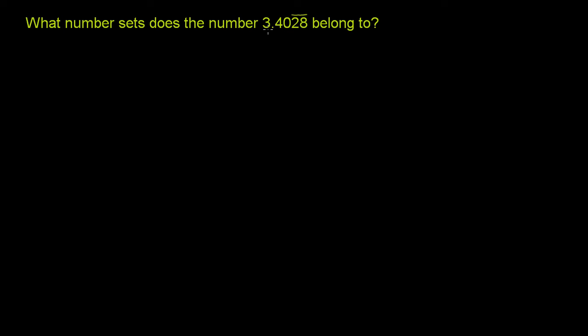What number sets does the number 3.4028 repeating belong to? Before even answering the question, let's think about what this represents, and especially what this line on top means. This line on top means that the 2.8 just keep repeating forever. So I could express this number as 3.4028, but the 2.8 just keep repeating on and on and on forever. Obviously it's easier to write this line over the 2.8 to say that it repeats forever.